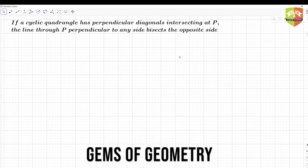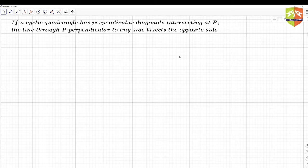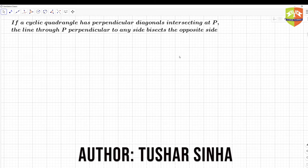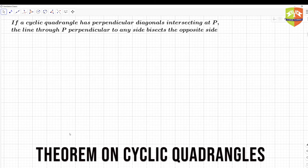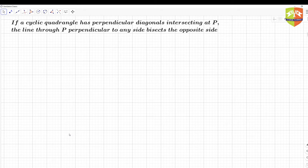Hello and welcome to another session on GEMSURF geometry. We are going to take up another theorem here. The theorem says: if a cyclic quadrangle has perpendicular diagonals intersecting at point P, the line through P perpendicular to any side bisects the opposite side.